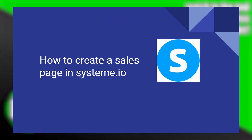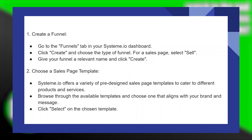Creating a sales page in System.io is very easy to do. Today, I'm going to show you how to do it. First, go to the Funnels tab in your System.io dashboard.